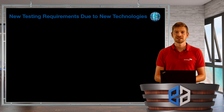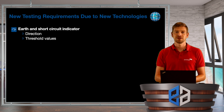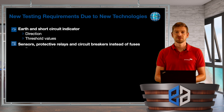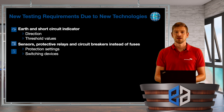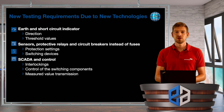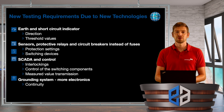What are the testing requirements due to the new technologies? For the earth and short circuit indicators we can test direction and threshold values. For the sensors, protection relays, and circuit breakers we can of course test the protection settings and the switching devices themselves with timing and for example contact resistance tests. For SCADA and control there can be interlocking and control of switching components, but measured values are also important. And as already mentioned, for the grounding system due to more electronics, we have continuity tests and grounding impedance measurements.